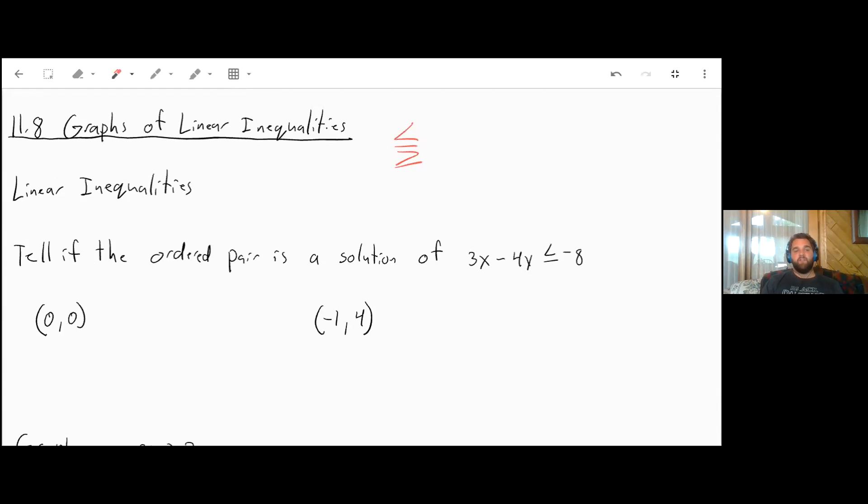One of the things we'll have to do is determine if given points are solutions to the equation. Our first point is (0,0). Plug in 0 for x and 0 for y. 3 times 0 is 0, minus 4 times 0 is also 0. 0 minus 0 is 0. Is 0 less than or equal to negative 8? No, negative 8 is less than 0. So that is not a solution.